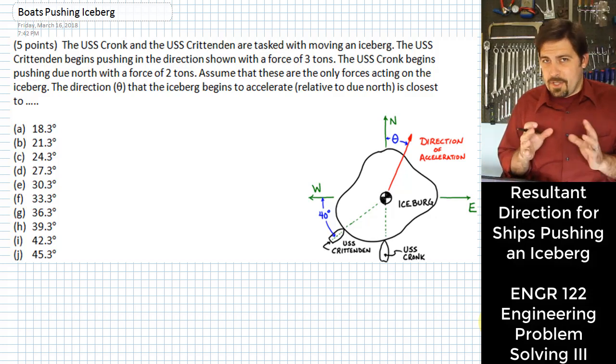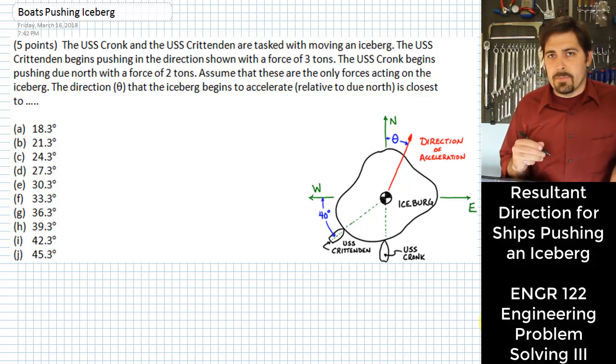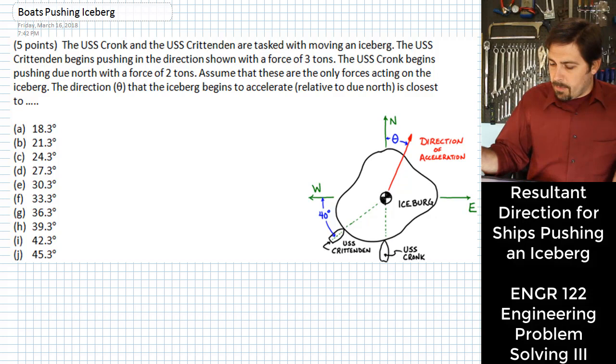The USS Cronk and the USS Crittenden are both trying to move an iceberg, and we're going to figure out what direction that iceberg moves under the amount of force that these two boats are applying to that iceberg. So that's this problem.